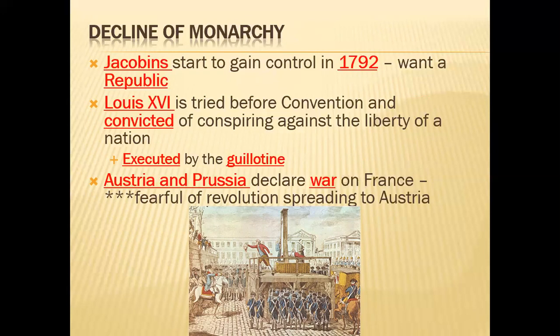The executions send shockwaves throughout Europe. Countries like Austria and Prussia, which have absolute monarchies, declare war on France to get it back under monarchical control. They don't want the revolutionary ideas spreading into their own countries and sparking revolutions that would cost them their power — it's a domino effect they're trying to prevent.